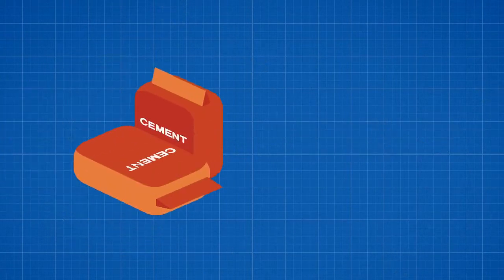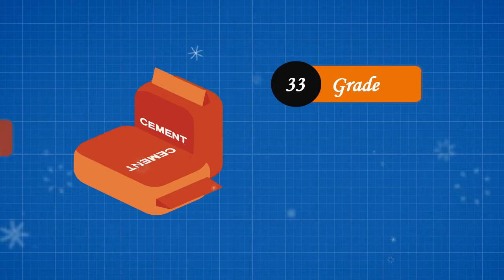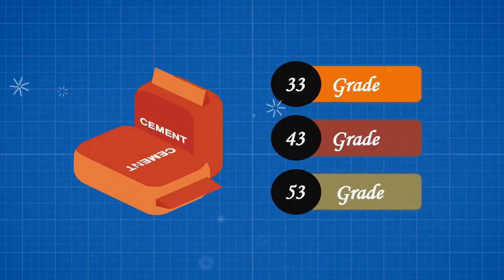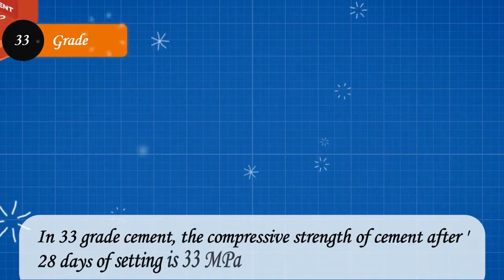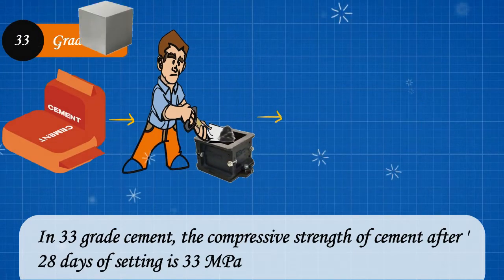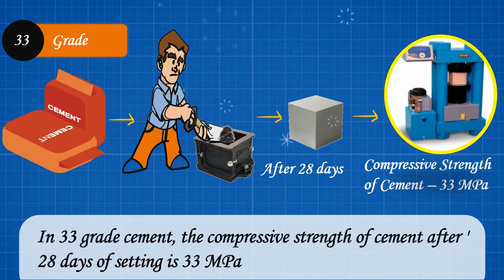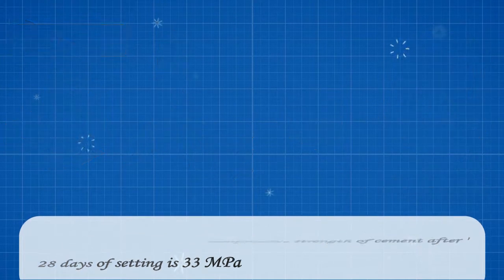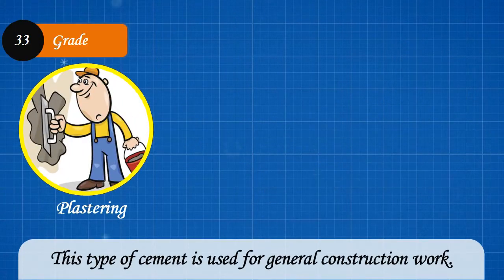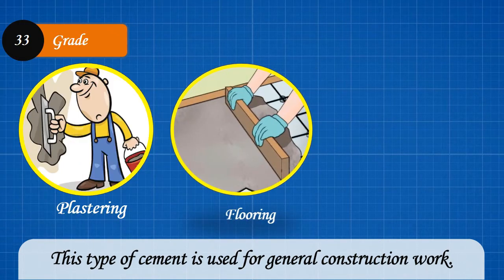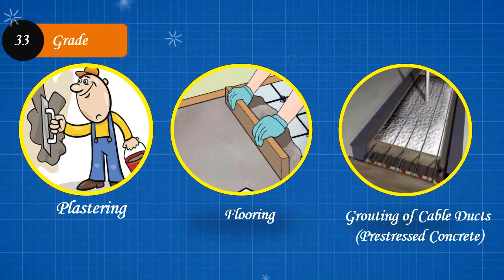The different grades of cement are 33 grade, 43 grade, and 53 grade. In 33 grade cement, the compressive strength of cement after 28 days of setting is 33 megapascal. This type of cement is used for general construction work such as plastering, flooring, and grouting of cable ducts in pre-stressed concrete works.